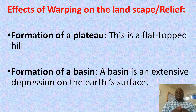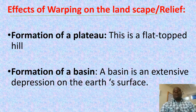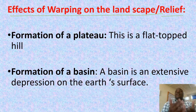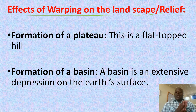Okay class, after understanding the definition and different types of warping, let us look at the effects of warping on the landscape, on relief. If there is down warping or up warping on the landscape, which major physical features do we get?